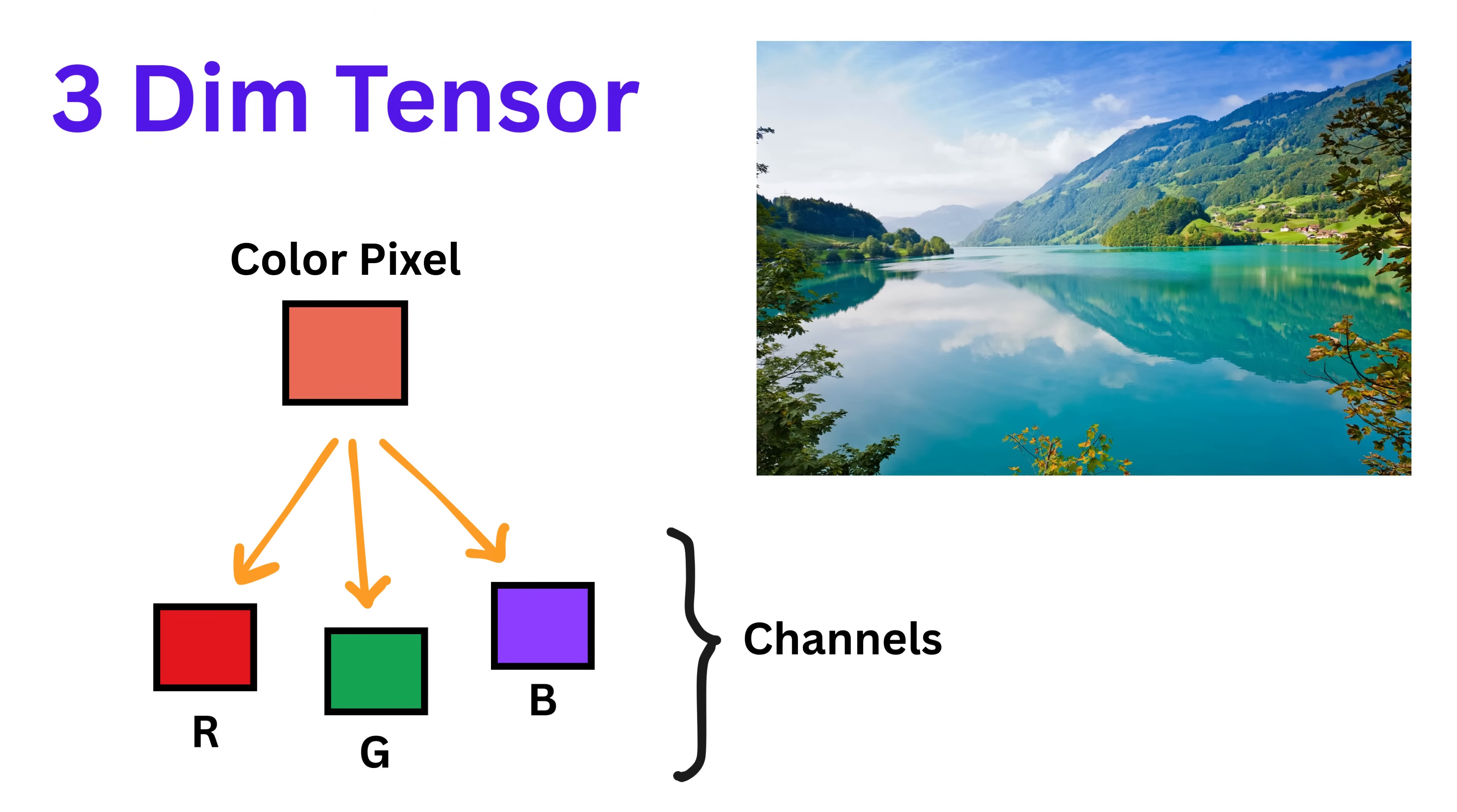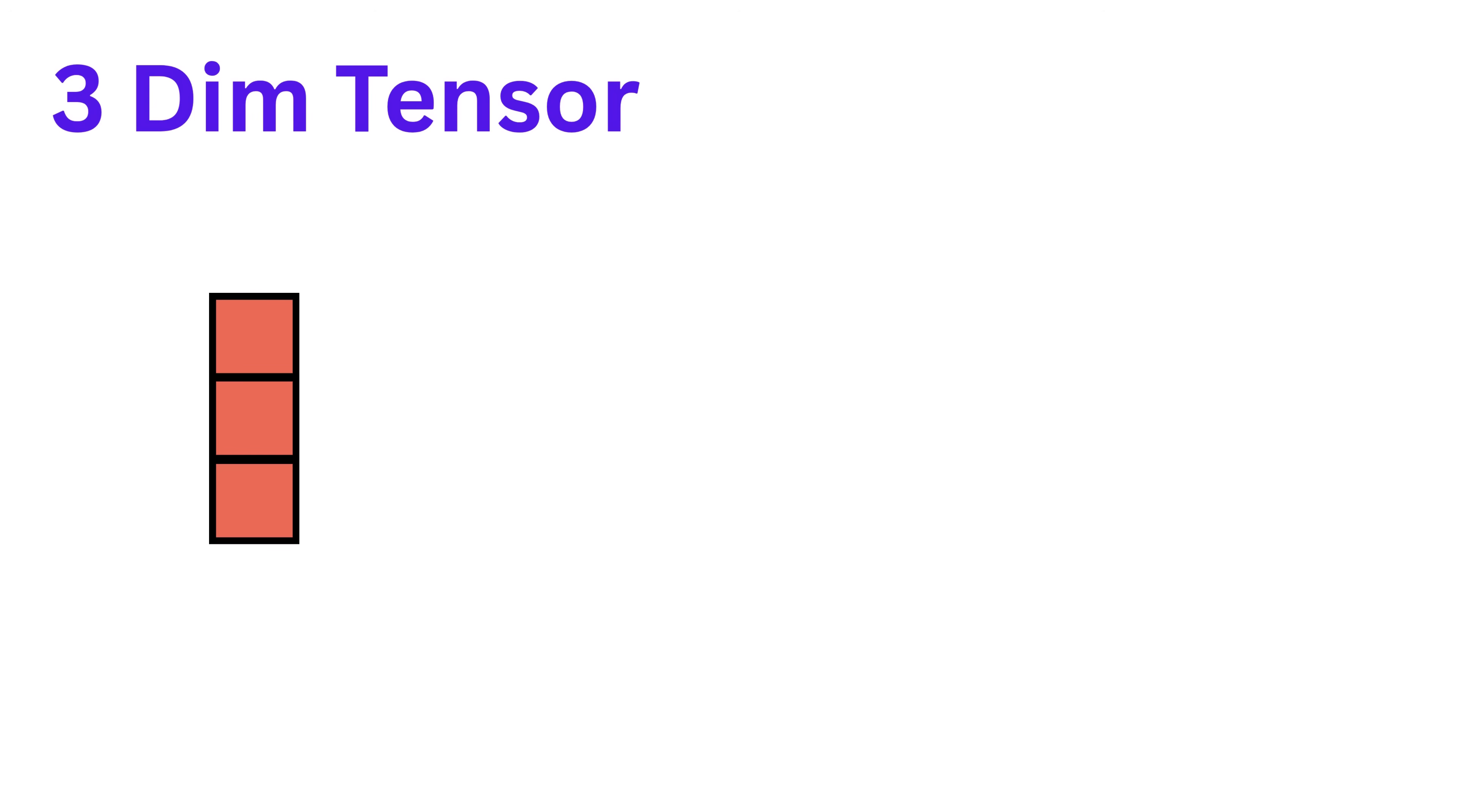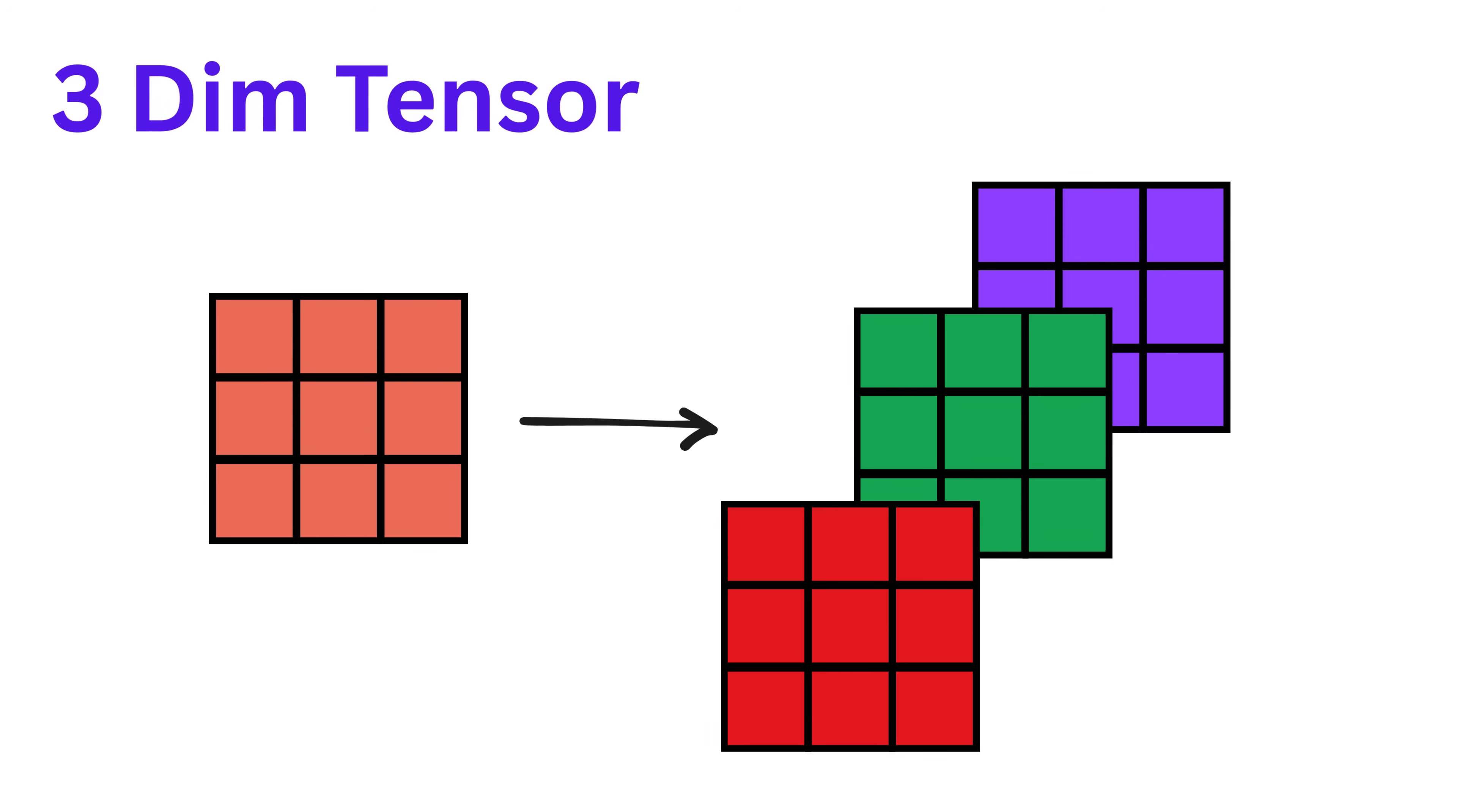These are called channels. So now, every single spot or dot in your image is not just a single number. It's a tiny bundle of three numbers. So what happens if your image is three pixels tall and three pixels wide? But now, each pixel has three values instead of one. You now have three matrices stacked together. One for red, one for green, and one for blue. This is called a three-dimensional tensor, or 3D. You can think of it like a cube made of numbers. Along the height, you have rows. Along the width, you have columns. And in the third direction, like depth, you have the color channels. So every point in this cube is made of three layers. Red, green, and blue values.